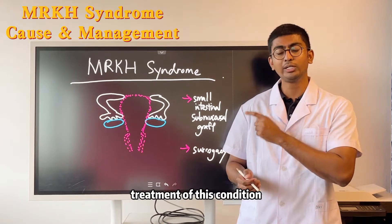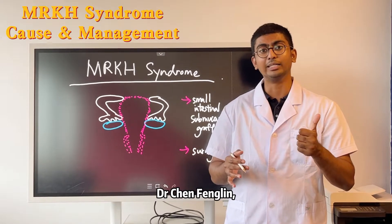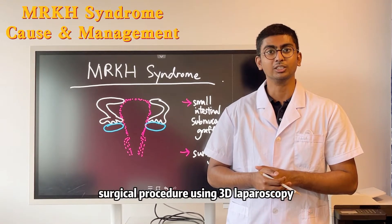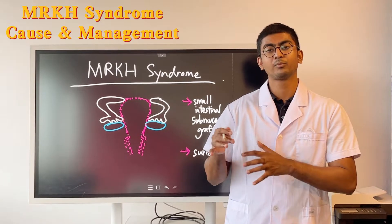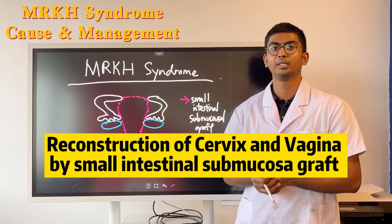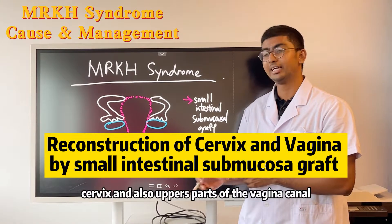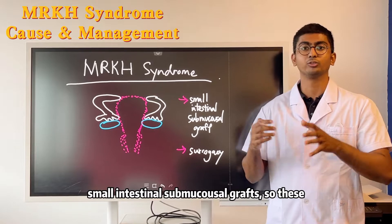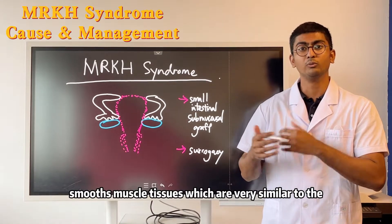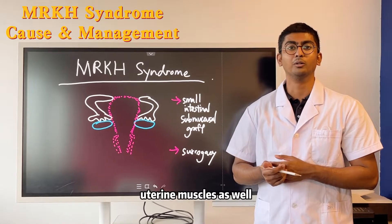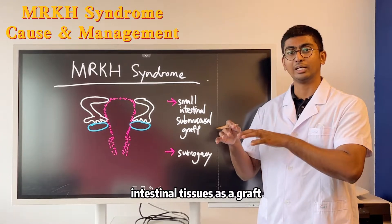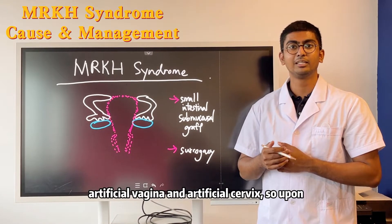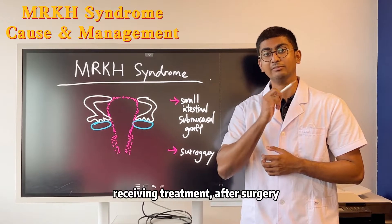For treatment, here at Antai Hospital, Dr. Chen Fung invented a highly specialized surgical procedure using 3D laparoscopy about 15 years ago. The procedure involves reconstruction of the uterus, cervix, and upper parts of the vaginal canal using small intestinal submucosal grafts. These intestinal tissues are smooth muscle tissues very similar to uterine muscles, and are used as grafts to create an artificial uterus, artificial vagina, and artificial cervix.